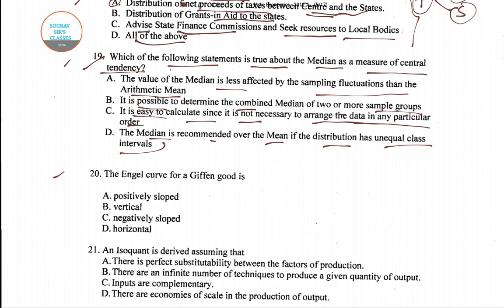For question 19, option B is the right answer: it is possible to determine the combined median of two or more sample groups. So the correct answer is option B.